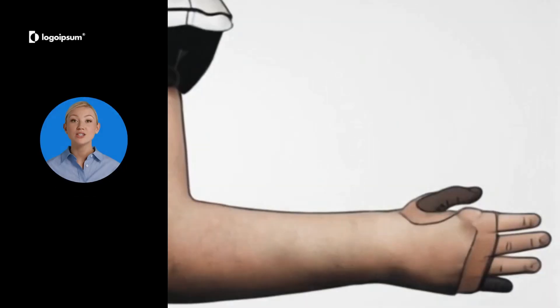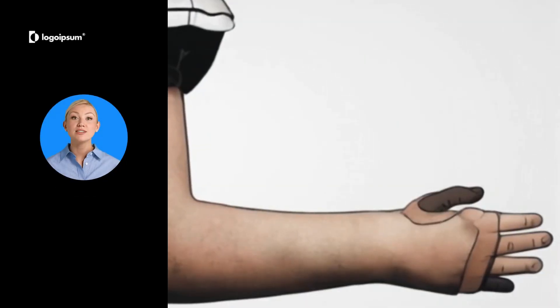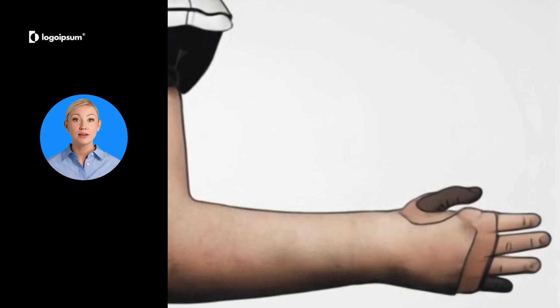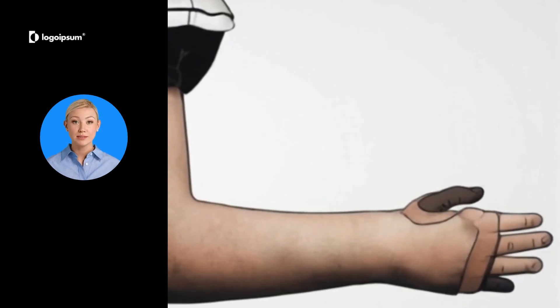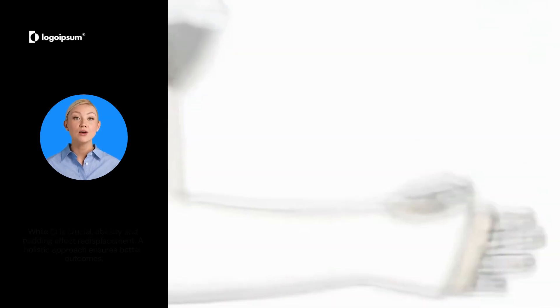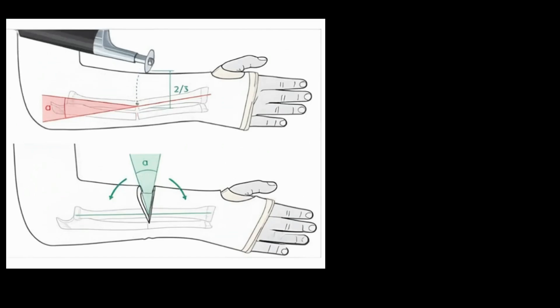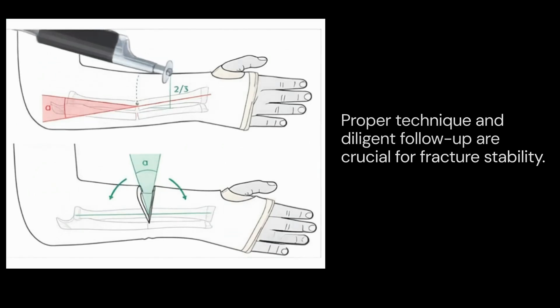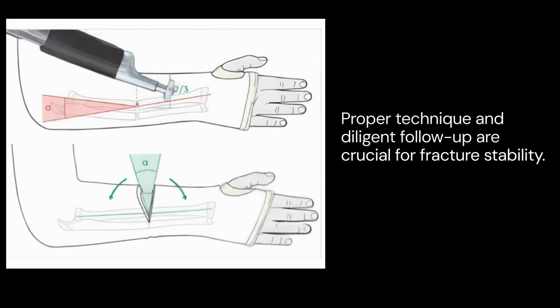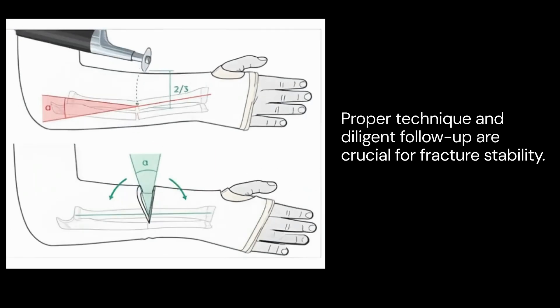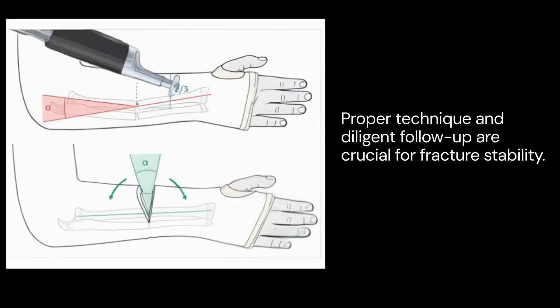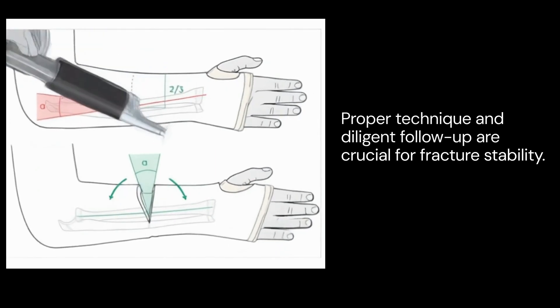While the CI is crucial, factors like obesity and excessive padding also play roles in re-displacement. A holistic approach ensures better outcomes. Proper technique and diligent follow-up are essential — the CI is a key factor, but not the sole determinant of fracture stability.